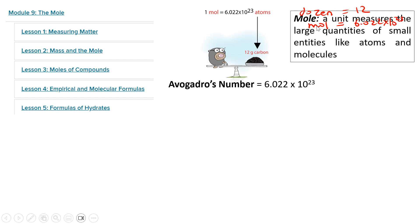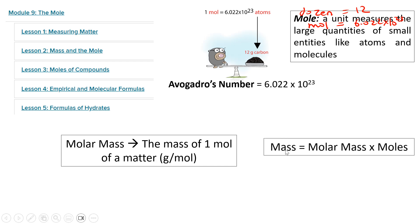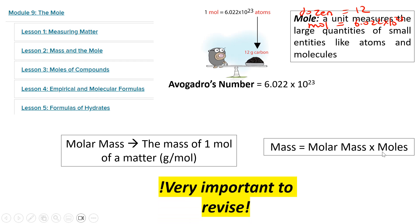So it's a unit for measuring large quantities of small particles like atoms or molecules. We also talked about the molar mass — the mass of one mole of matter. We use the equation: mass equals molar mass times the number of moles. This is again very important for you to revise, because we are going to use it in grade 12 advanced.